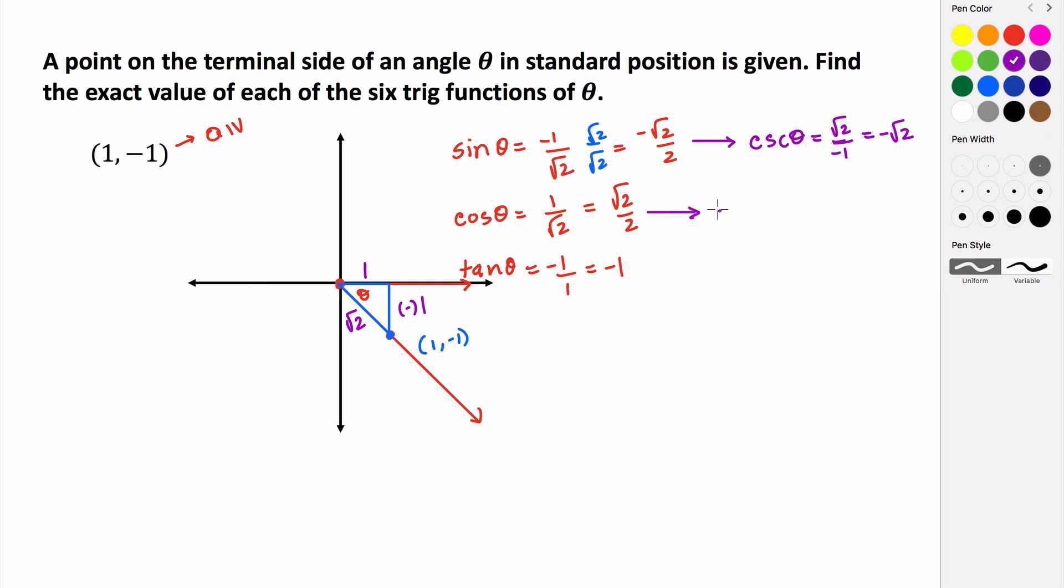The reciprocal of the cosine is the secant of θ, and then this time we take the reciprocal of √2 over 1, and it's just going to be positive √2.